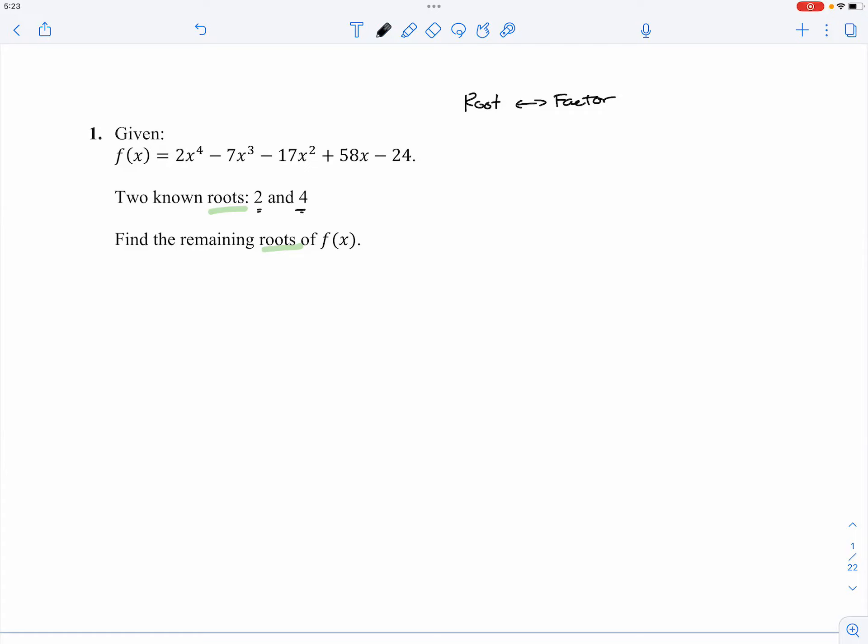When we say you have two roots, roots of two and roots of four, it means this. It means that you have a factor of x minus two. It means that you have a factor of x minus four. And what we are trying to do is basically we want to find out all the factors.